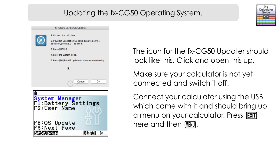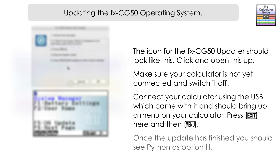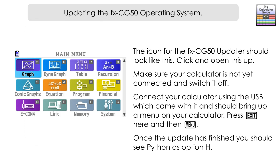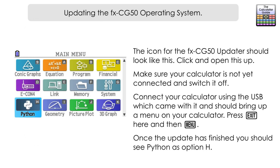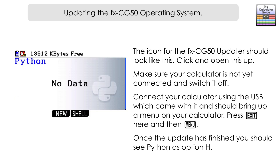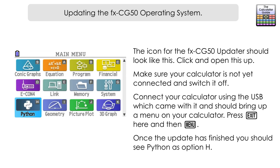This should get your calculator prepared to receive the update. Then on your computer press OK, and that should transmit the update — just wait for it to install onto your calculator. When you reload it, scroll down on the menu screen and you should see Python as an option, which is essentially a scaled-down version of Python allowing you to create programs within the CG50.